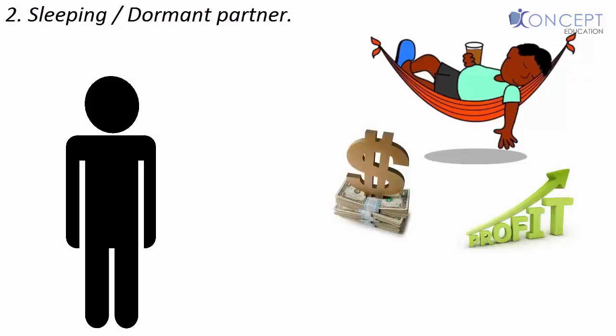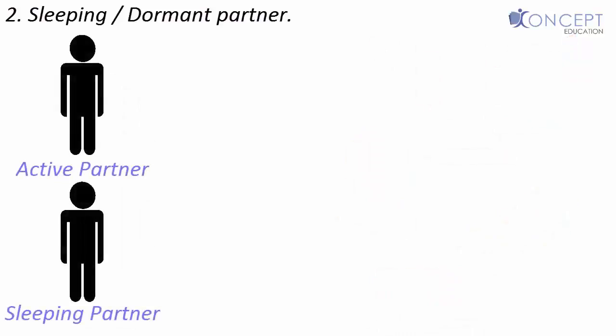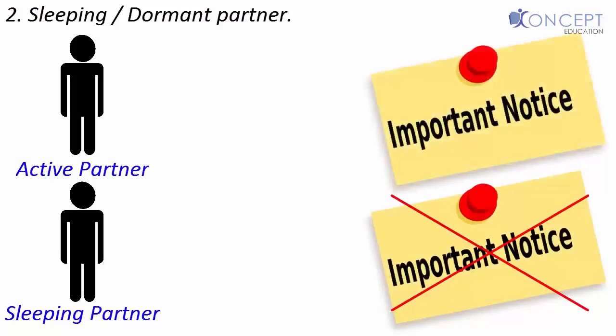He is equally liable to pay any debt to the outsiders of the firm, even though his existence is kept secret. One big difference between active and sleeping partners is that the retirement of a sleeping partner does not need a public notice, unlike an active partner. After his retirement, he is not liable for the acts done by the firm.